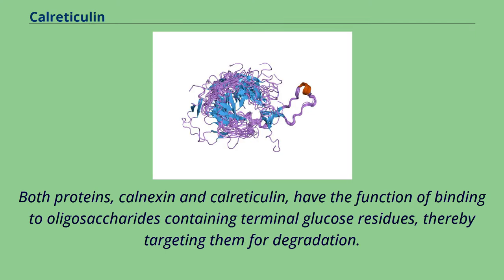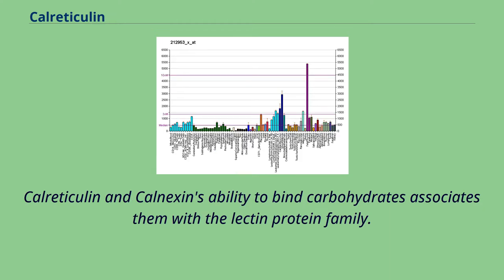Both proteins, calnexin and calreticulin, have the function of binding to oligosaccharides containing terminal glucose residues, thereby targeting them for degradation. Calreticulin and calnexin's ability to bind carbohydrates associates them with the lectin protein family.